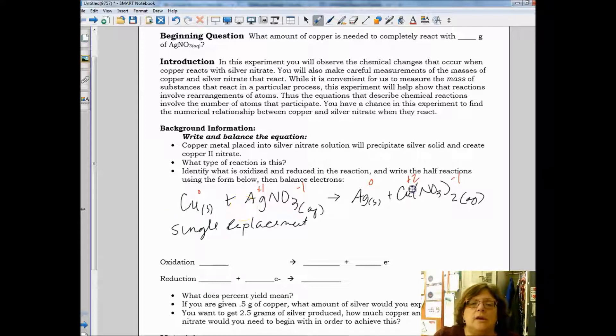So looking at these numbers, what is being oxidized? Whose charge has gone up? Copper has gone from a zero to a plus two. So we write copper becomes copper two, and it lost two electrons. Silver is going from a plus one to a zero, so it is losing one electron.